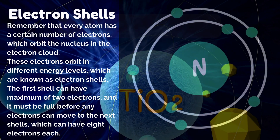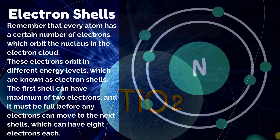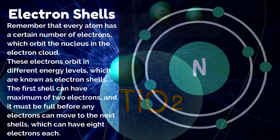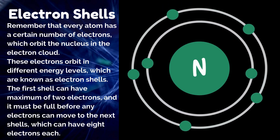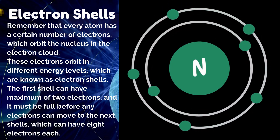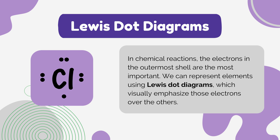The first shell can have a maximum of two electrons, and it must be full before any electrons can move to the next shells, which can have eight electrons each. In chemical reactions, the electrons in the outermost shell are the most important. We can represent elements using Lewis dot diagrams, which visually emphasize those electrons over the others.